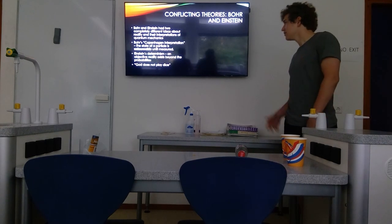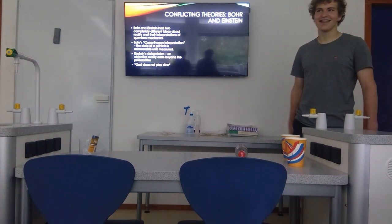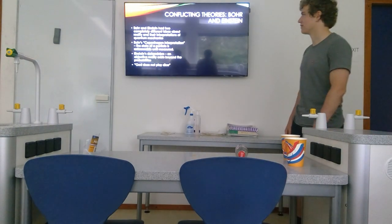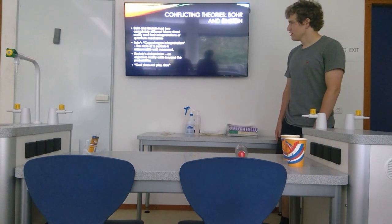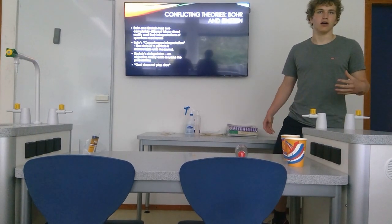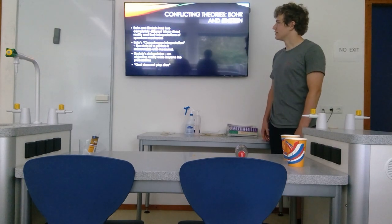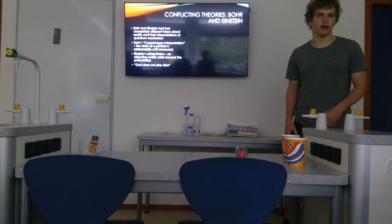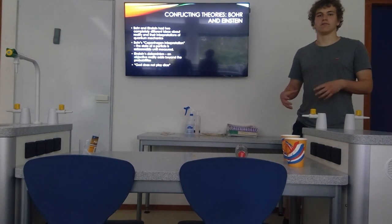Before we start, we have to talk about the stuff that came before what I'm going to be talking about. Basically, there were two conflicting theories in the beginning of the 20th century about interpretations of quantum mechanics. Bohr and Einstein had two different ideas about reality and what they thought was happening at the quantum scale when we're talking about particles.